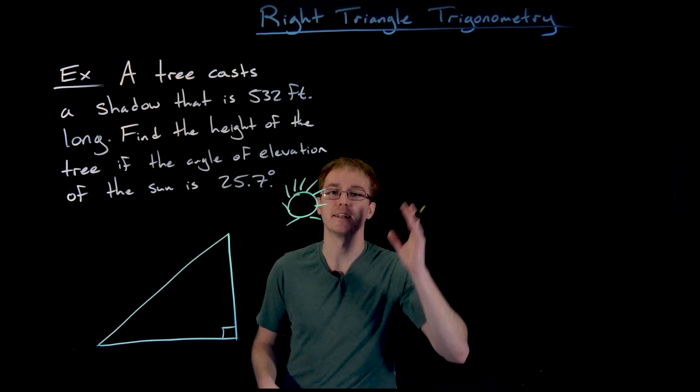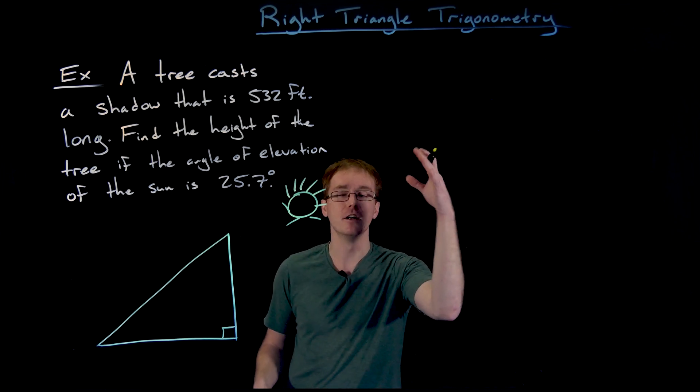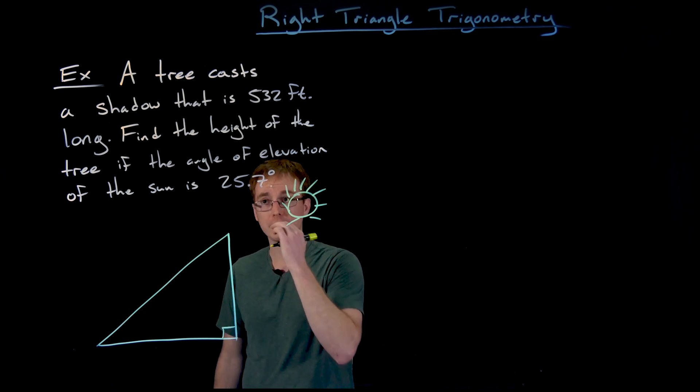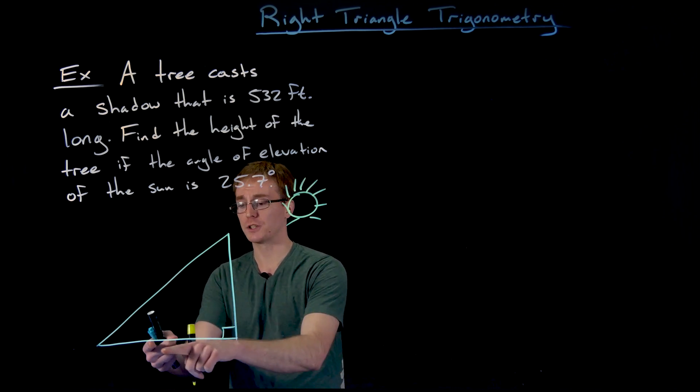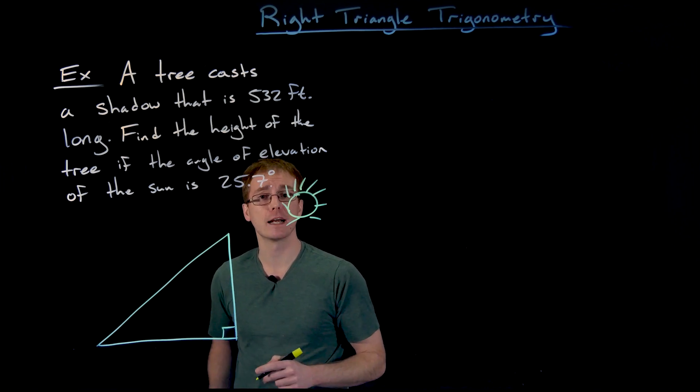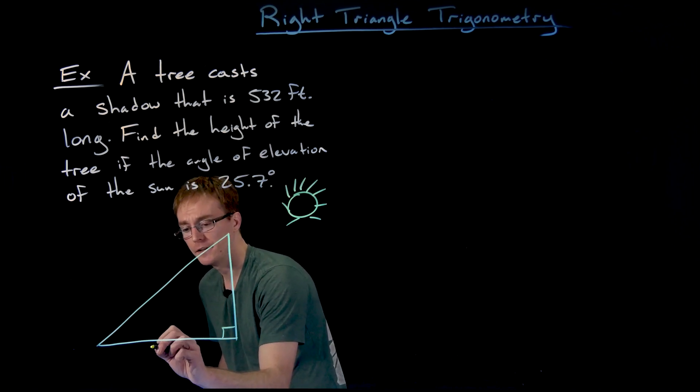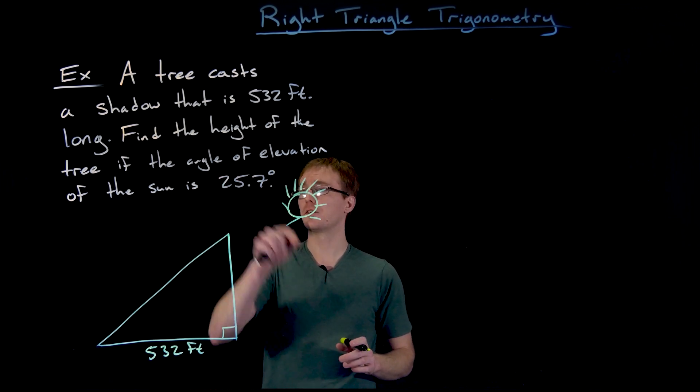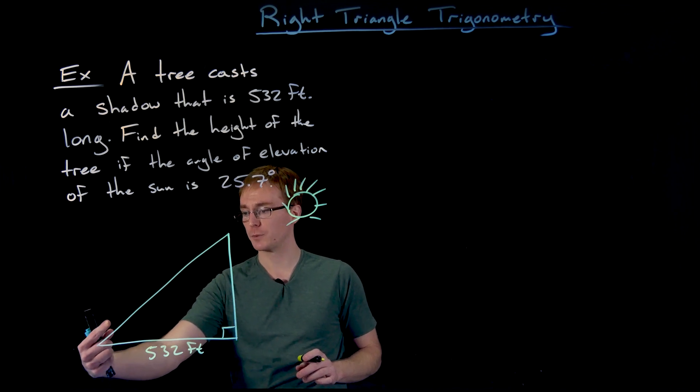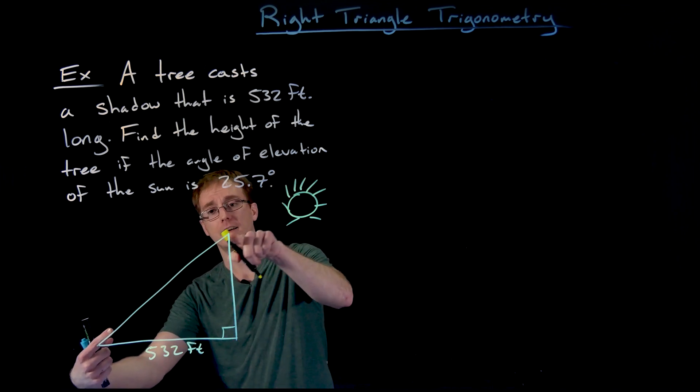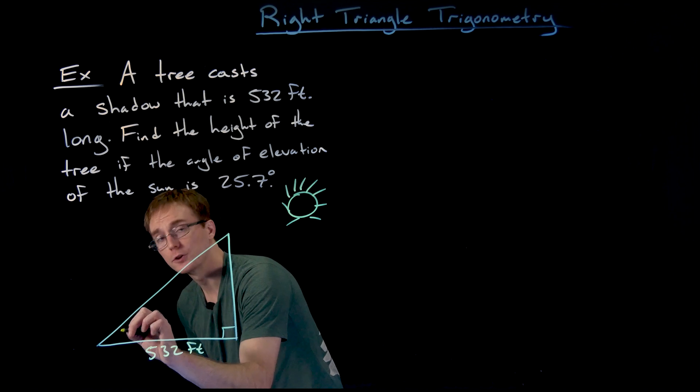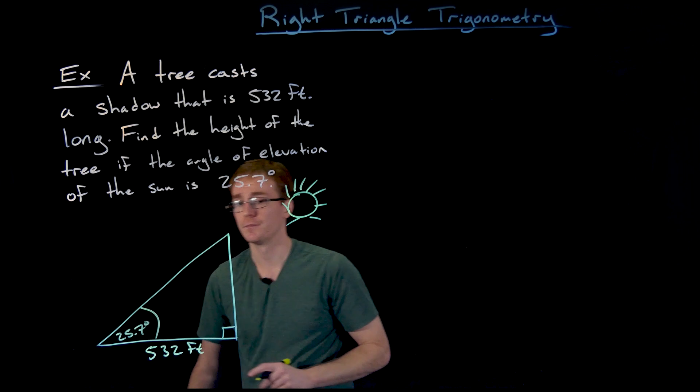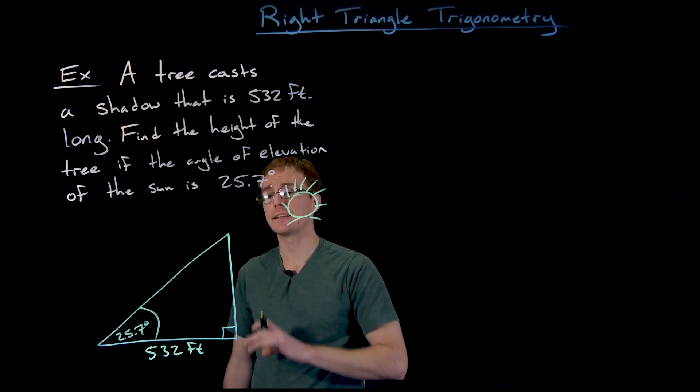We're assuming the tree is standing perfectly vertical up, it's not tilted to the side or twisty or anything like that. Very simple scenario here, and so what we know is the length of the shadow, which is going to be like the base length of this right triangle that we just drew, is 532 feet long. We're told that the angle of elevation of the sun, that is the angle between the ground and the sun, which is made by the top of the tree up there, is about 25.7 degrees, and so what we're trying to figure out here is the height of the tree.